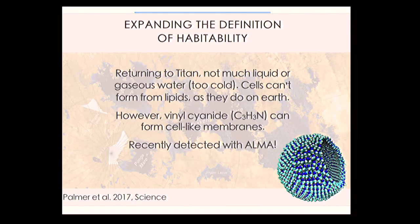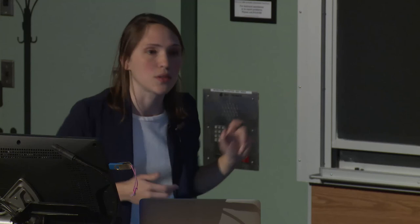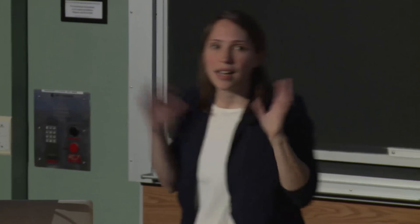Titan is another exciting prospect. Unfortunately, it's so cold that you have methane lakes rather than water lakes — the water there is all ice. You can't form normal lipid-based cells. But just this past summer, vinyl cyanide was detected with ALMA that naturally forms cell-like structures, so you could have an entirely different cell type on Titan. We would have to go there to find out — but don't use rockets.